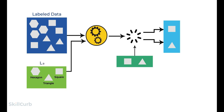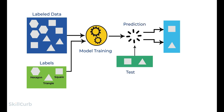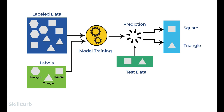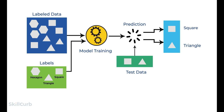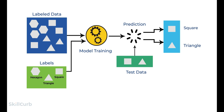Let's see this phenomena diagrammatically. You can see that some data and labels are being supplied to the machine learning algorithm. As a result, a machine learning model is being trained. After training the model, test data is provided — two shapes are supplied as test data — but here the labels are not provided. The model predicts what type of shapes these are and gives the predicted output. This is a summarized machine learning procedure that we will discuss in detail throughout the course.